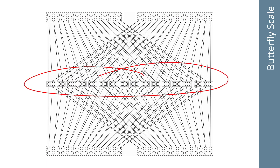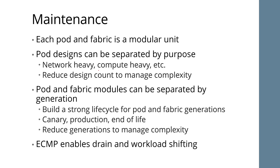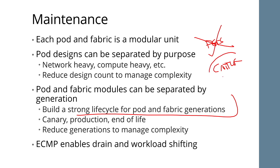You need to start with 100-gig — whatever you think the max size for the fabric will be. When you run out of fabric space and bandwidth, you have to forklift the entire fabric and move to the next size, which is why it's important to think through what size the fabric will ultimately be. Pod and fabric modules should be separated by generation, not per device. Think of these devices as cattle, not pets — treat every device as commodity hardware regardless of vendor. Build a strong lifecycle on pod and fabric generations.